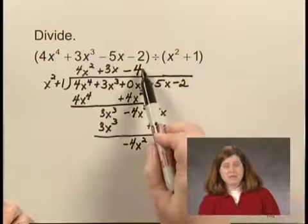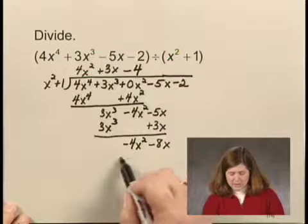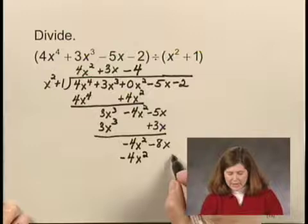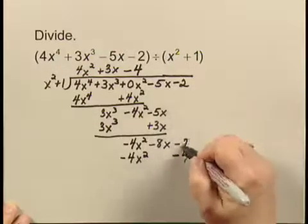And I multiply -4 times x^2 + 1. That gives me -4x^2 - 4. I line that up under my constant term, and I can bring down that constant term if I want to.